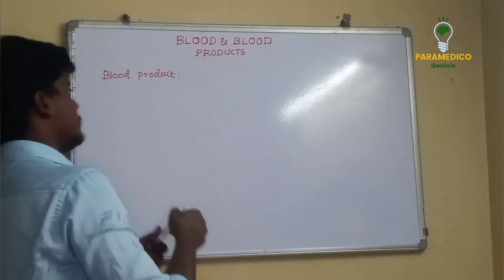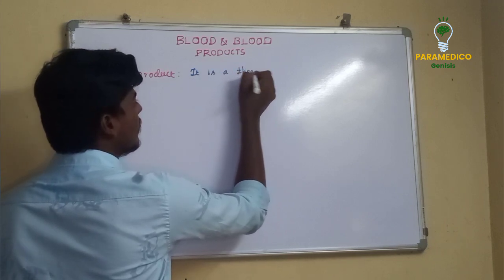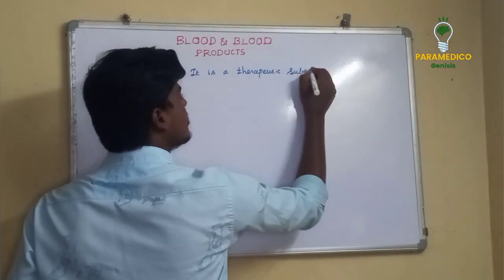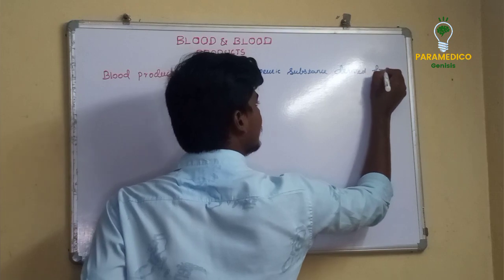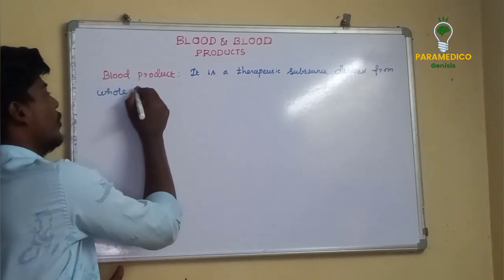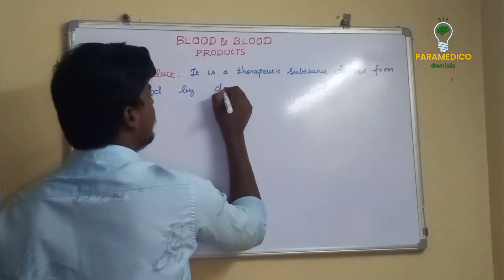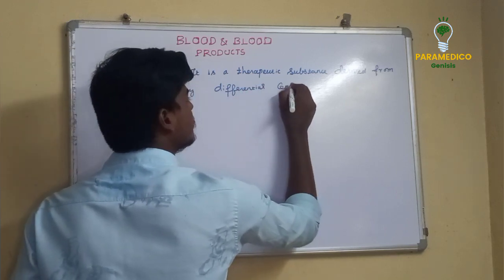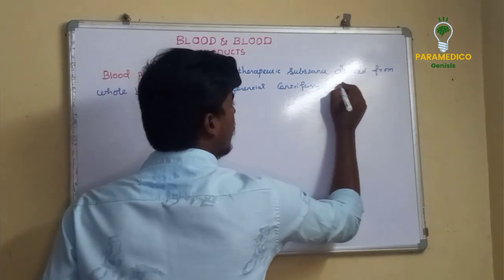A blood product is a therapeutic substance derived from whole blood, prepared by differential centrifugation or apheresis.